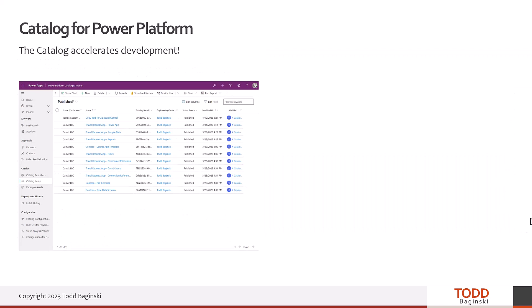So why was the catalog really made, and how does it accelerate development? First, it allows you to publish and maintain reusable solution components. In my screenshot you can see several examples: a copy-text-to-clipboard control, a travel request Power App with several pieces, a Contoso Canvas app template, Contoso PCF controls, and a base data schema. A lot of these things can be reused, published to the catalog, downloaded from the catalog, put into your environment, and then built on top of.